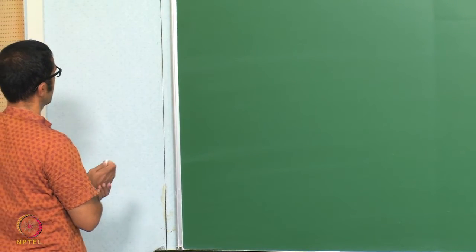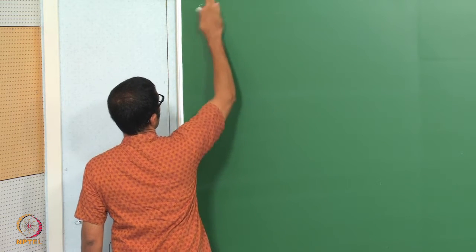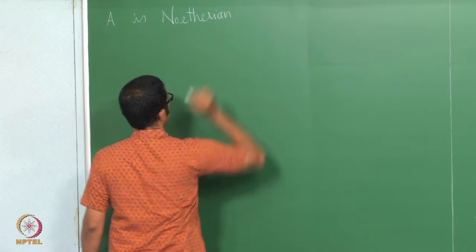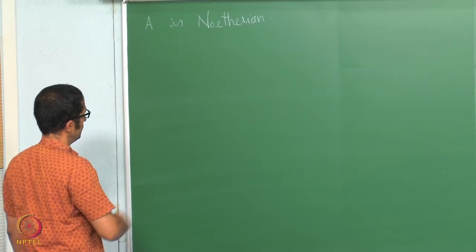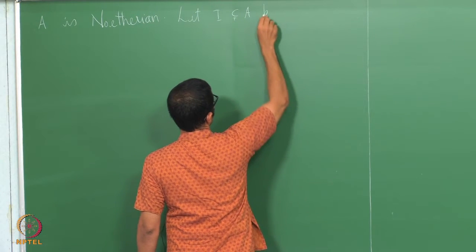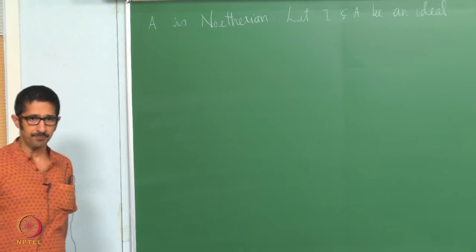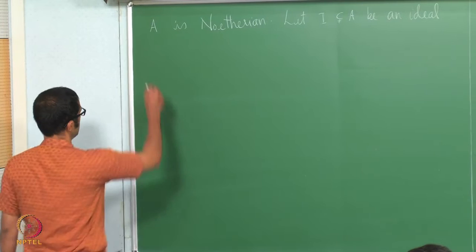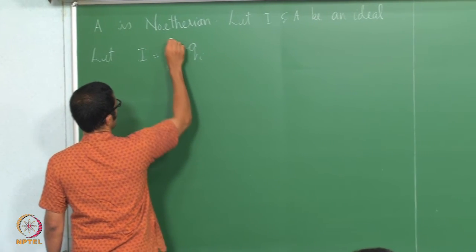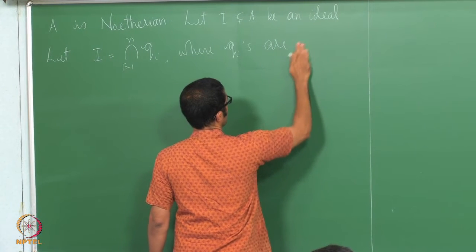Our ring A is Noetherian. Suppose I have a proper ideal I. Then we know that it has a primary decomposition. Let I be equal to intersection q_i, i from 1 to n, where q_i's are primary ideals.